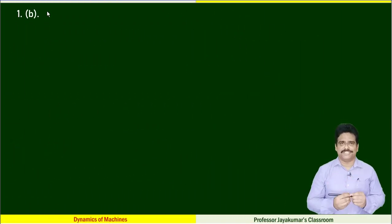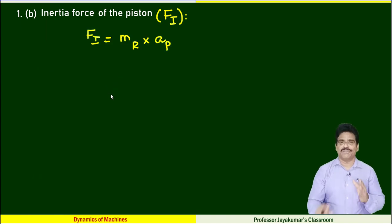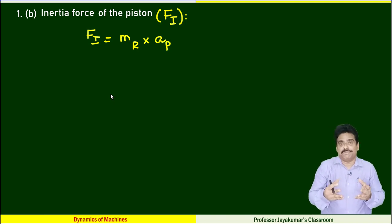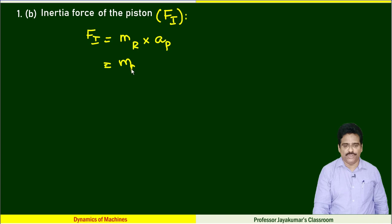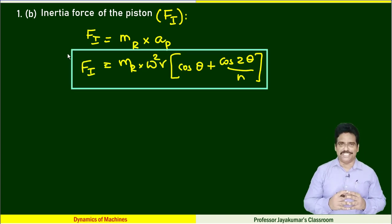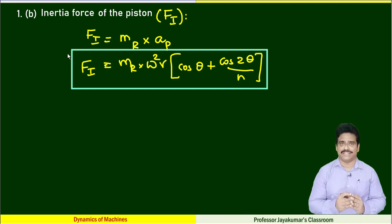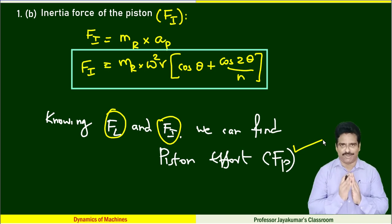Now let us determine the inertia force of the piston. Inertia force equals M×A — mass of the reciprocating parts multiplied by the acceleration of the reciprocating parts, which is the acceleration of the piston. We already know the formula for acceleration of the piston, so we get the equation for inertia force. Now we can easily determine piston effort.